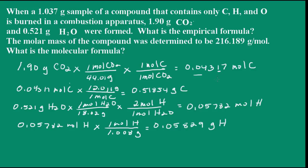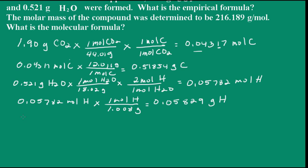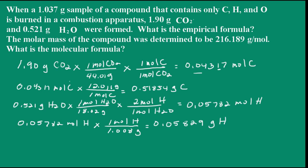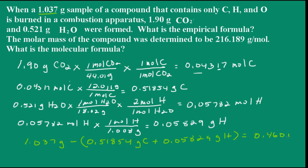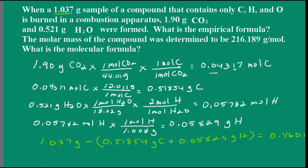We know the number of moles and grams of carbon and hydrogen. Now we can determine how much oxygen we have. We know from the problem that we have 1.037 grams of sample, and we subtract from that the masses of carbon and hydrogen: 0.51854 grams of carbon and 0.05829 grams of hydrogen. This works out to be 0.46017 grams of oxygen.